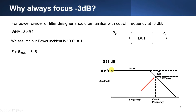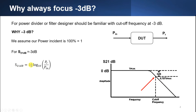This is a low pass filter — it passes all the lower frequencies and does not allow higher frequencies to pass through. So next, the S21dB formula is equal to 10 log of power received divided by power input.